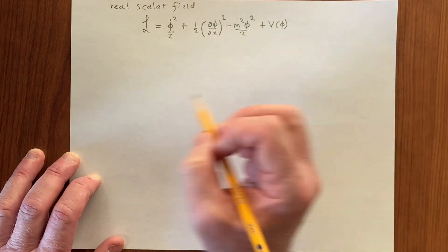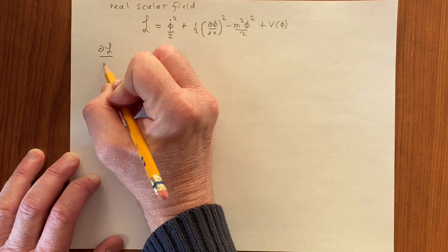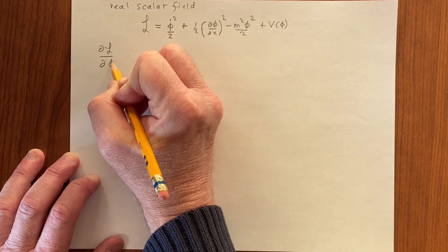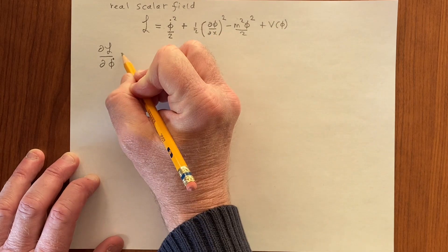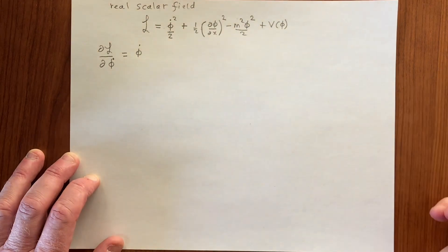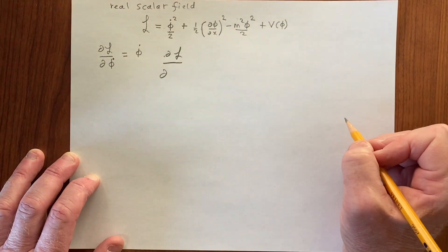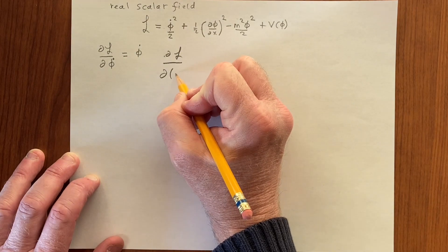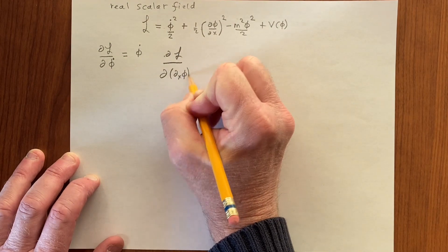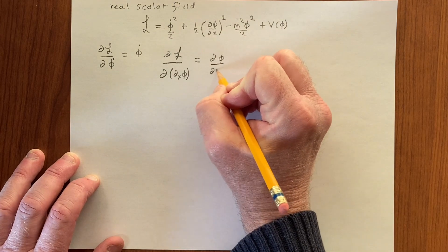And of course we need to evaluate dl by d phi dot, and that is just phi dot. dl with respect to d phi by dx, let's just write it like that, and that is just d phi by dx.